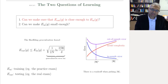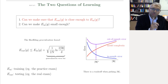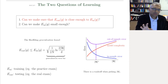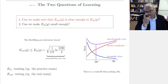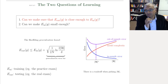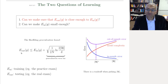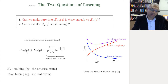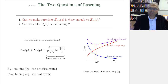Last time we discussed the feasibility of learning and boiled it down to two basic steps. The first step is: can you ensure that E-out for G, the final hypothesis from learning, is close to E-in of G? If so, then you've established the first step of learning. The second step is to check whether E-in of G is small enough. If you can get both of those to work, then you can conclude that E-out is low and you've learned — G is approximately equal to F.